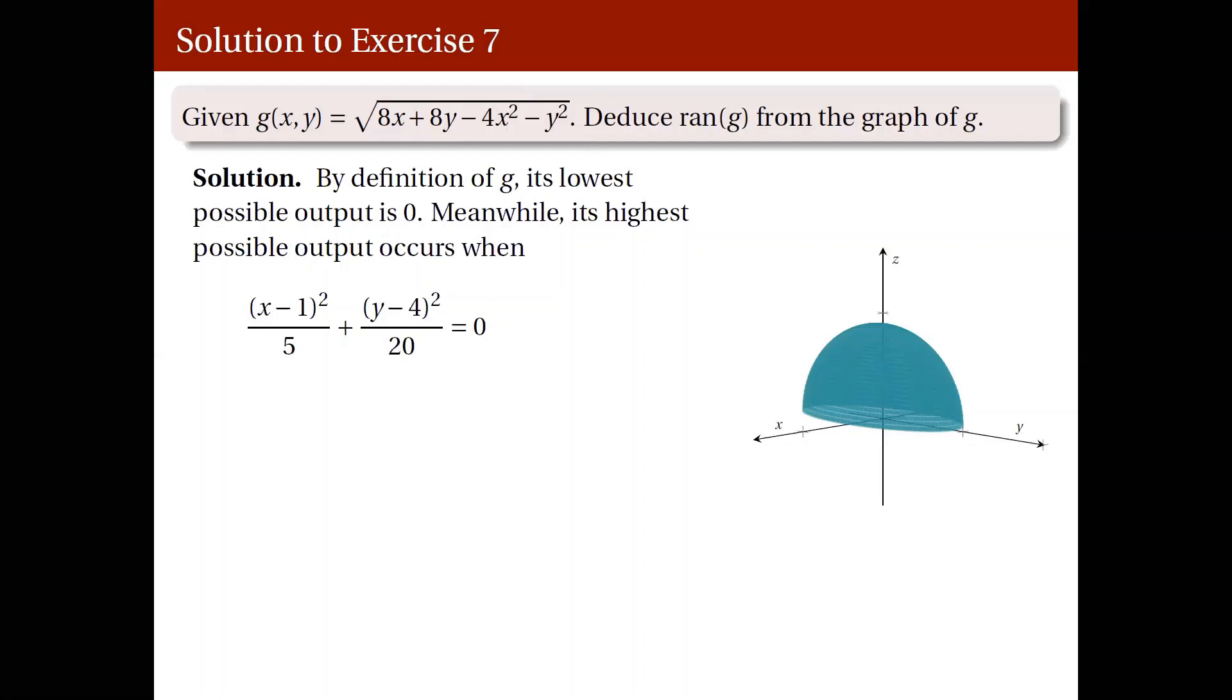So, we have (x minus 1) quantity square over 5 plus (y minus 4) quantity square over 20 equal to 0, which is satisfied only when sum of 2 squares equal to 0. Its graph is a point. Whenever we are asked to graph it. But here, we only need the coordinates of your point. So, x equals 1 and y equals 4.